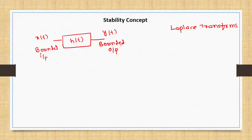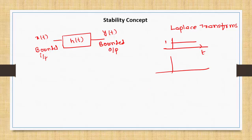What is 'bounded'? Bounded means a signal is present between any two values. For example, a step signal is bounded because it has a minimum value of 0 and a maximum value of 1. On the other hand, e^(at) is not bounded because its maximum value is infinity. If any signal takes plus or minus infinity values, it is called an unbounded signal.